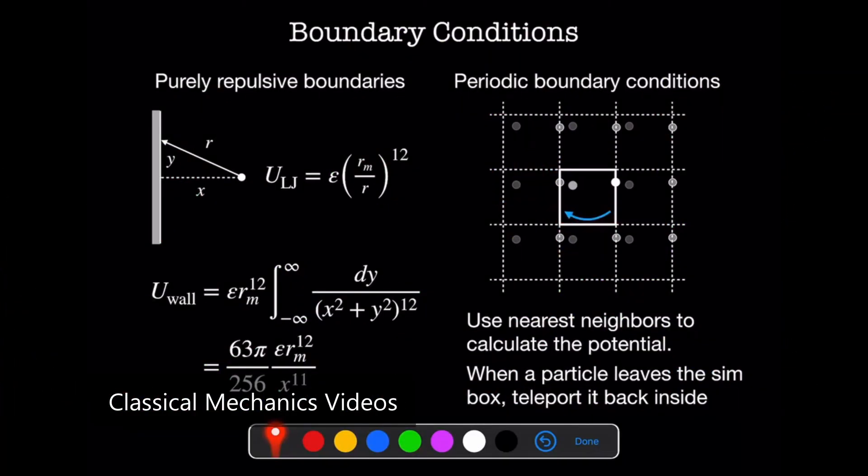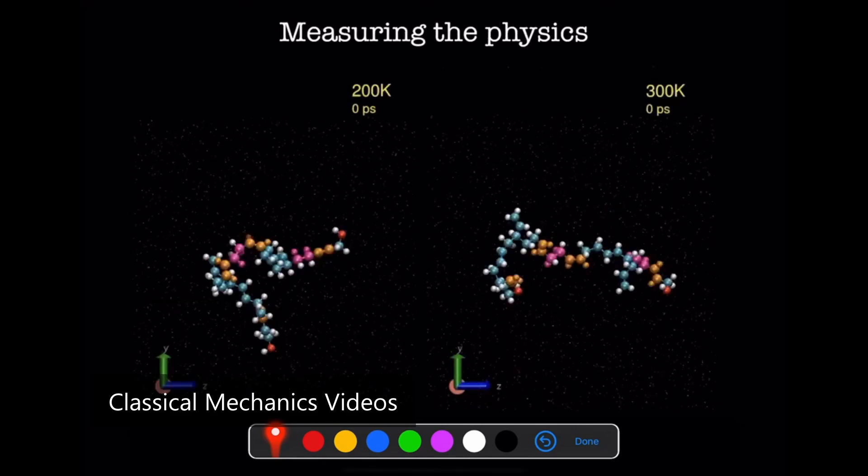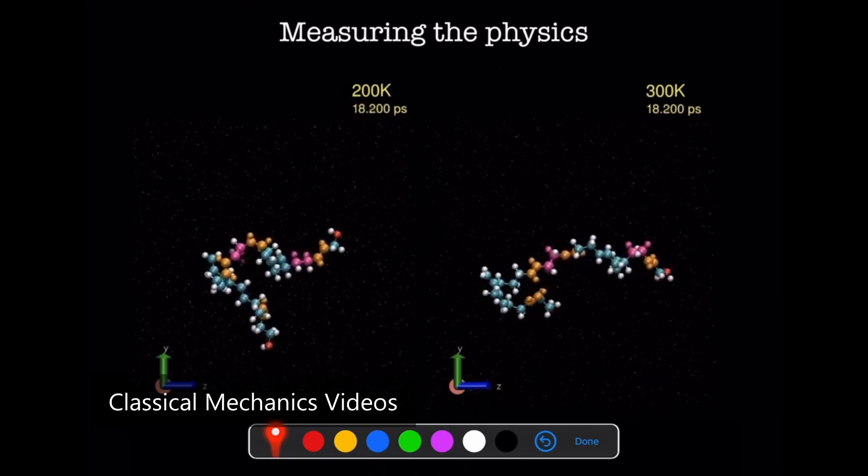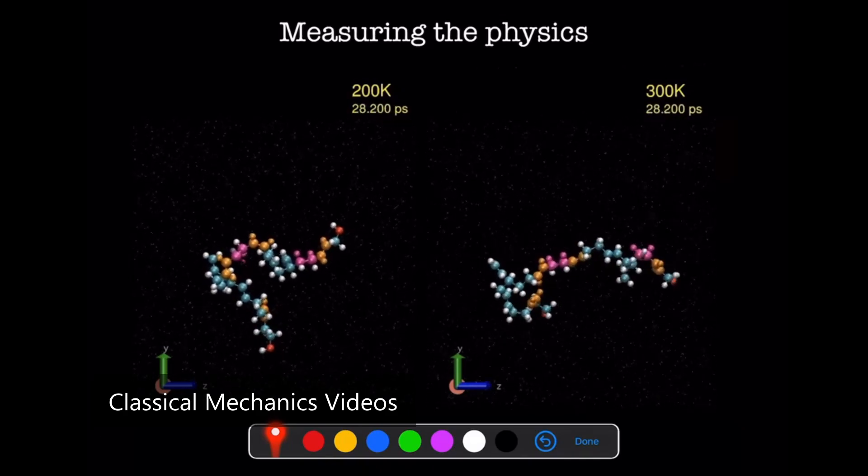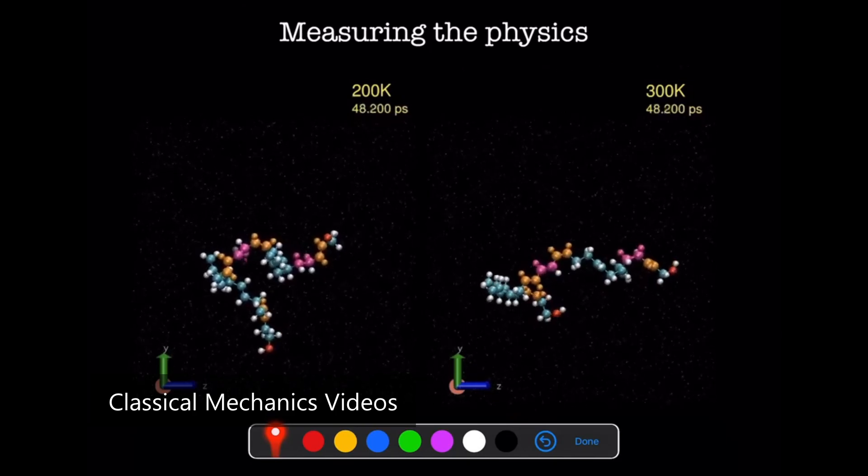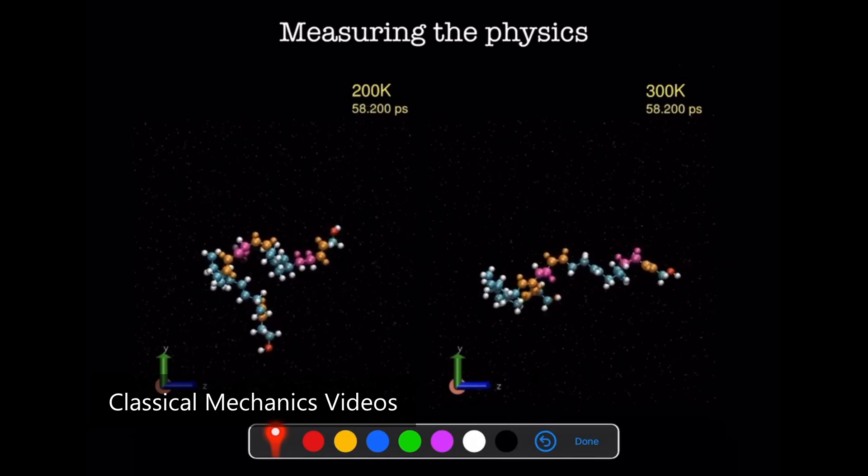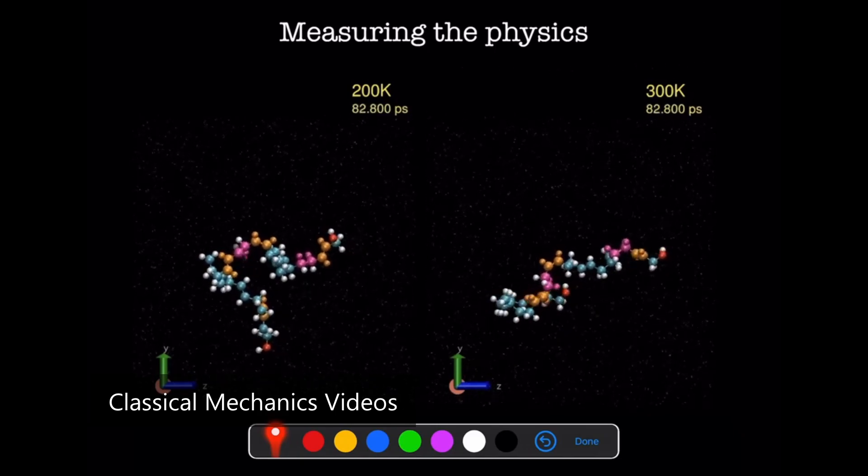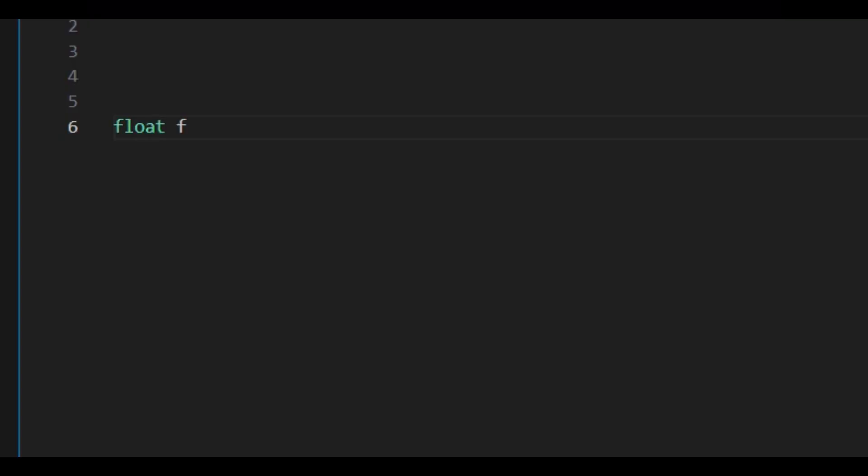So I started looking into how real particle physics handles this—things like the Lennard-Jones and Morse potentials. They're designed to model how atoms and molecules attract and repel each other smoothly over distance. But those didn't quite work in this context—they were too rigid, too perfectly tuned for atomic interactions. So I experimented a lot, talked with some AIs—Grok, Gemini, even ChatGPT now and then—and eventually landed on a force function that just clicked.